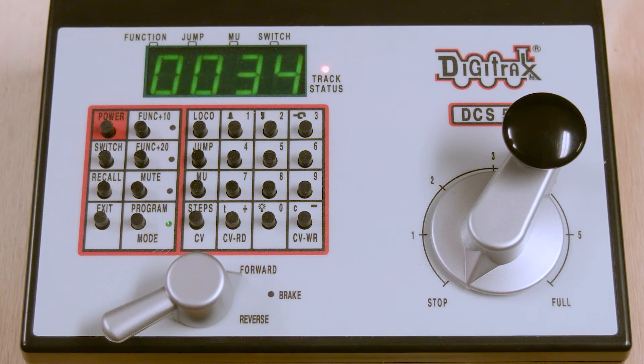We then remove the locomotive from our program track, since the program track does not carry current except at the instant it sends the program message, and we're going to put the locomotive back on the main line and test it.